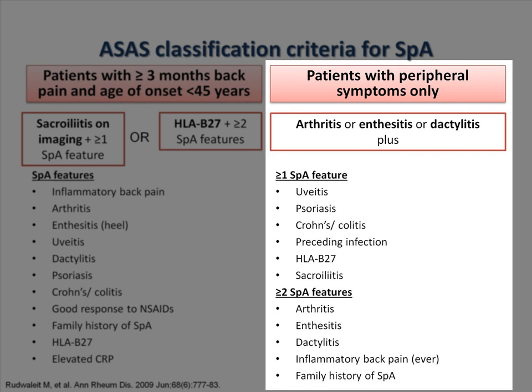Inflammatory back pain is classified as patients having four out of five of the following symptoms: age of onset less than 40 years old, insidious onset of back pain, back pain with improvement with exercise, back pain that does not improve with rest, and back pain that is worse at night and improves on getting up.